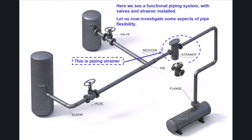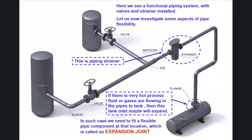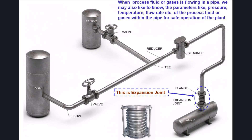Let us now investigate some aspects of pipe flexibility. If very hot process fluid or gases are flowing in the pipes to a tank, then the tank inlet nozzle will expand. In such cases, we need to fit a flexible pipe component at that location called an expansion joint. When process fluid or gases are flowing in a pipe, we may also need to know parameters like pressure, temperature, and flow rate for safe operation of the plant.